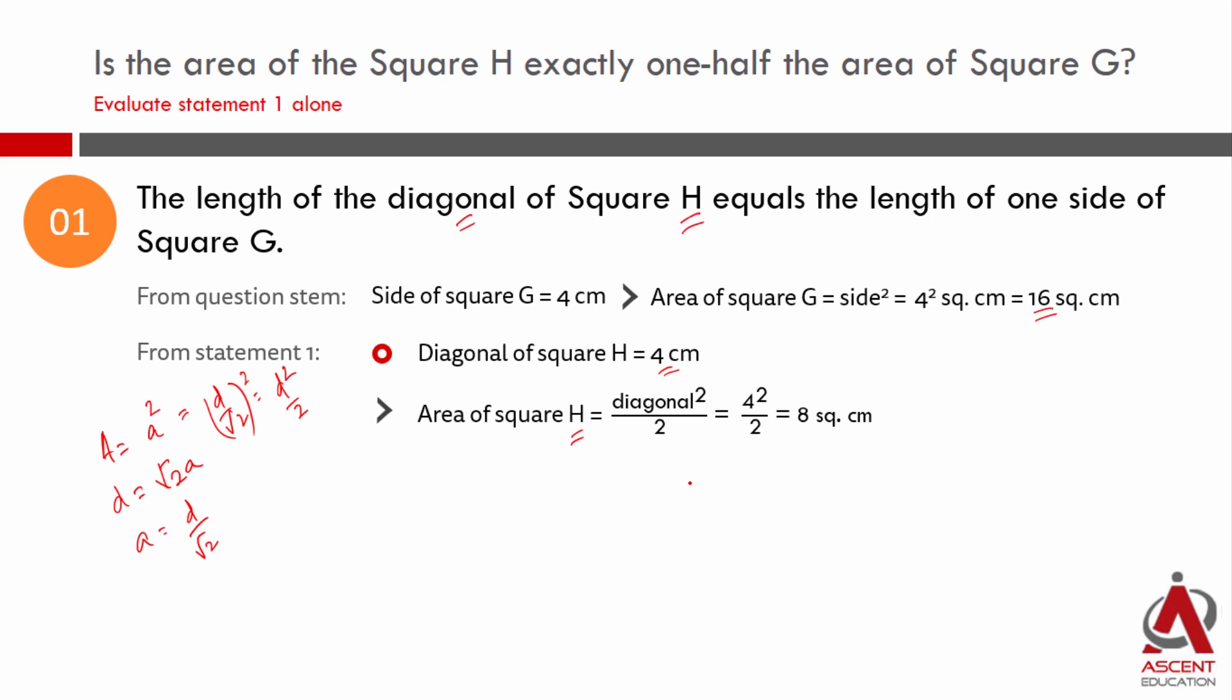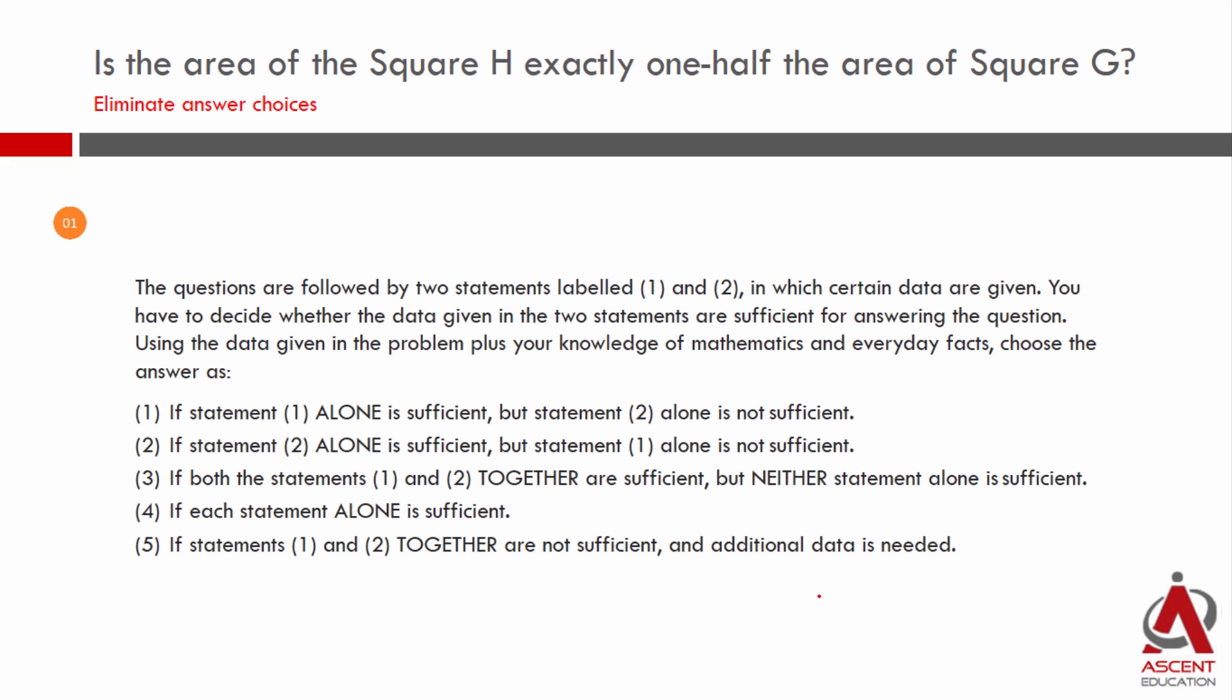H has diagonal 4. So area is 4 squared by 2, which is equal to 8 square centimeters. G has area 16, H has area 8. So H's area is half the area of G. Clear yes answer, so statement 1 is sufficient to answer the question.